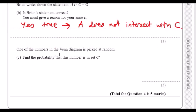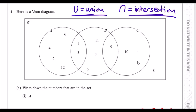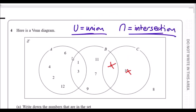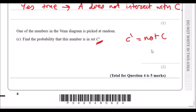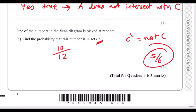Part d: a number is picked at random. Find the probability that the number is in the set C' (not C). C' means every element not in circle C, so we exclude those elements. Counting all numbers not in C gives 10 out of 12 total elements. Simplifying, the probability is 5/6.